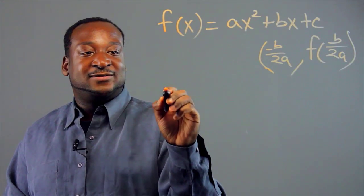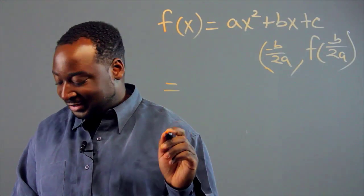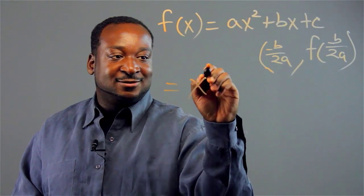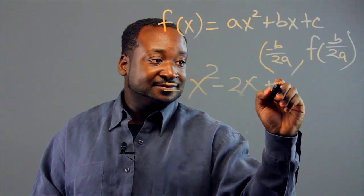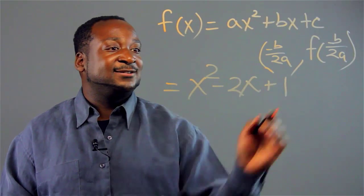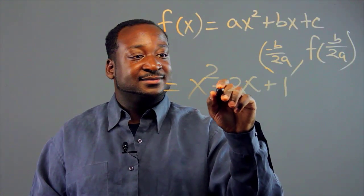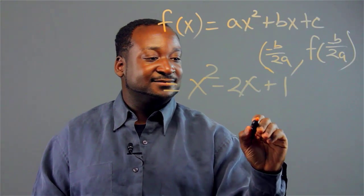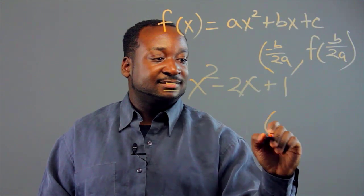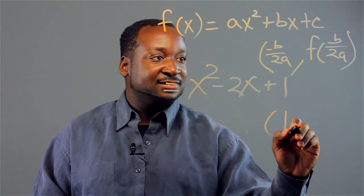So if I'm given a function of the form x squared minus 2x plus 1, the vertex is going to be negative b, which is 2 over 2a, which is 1.